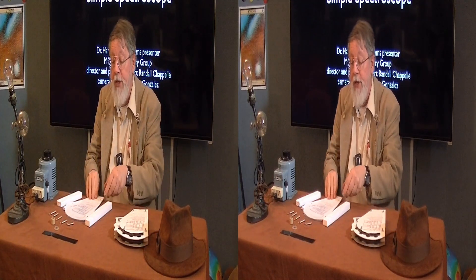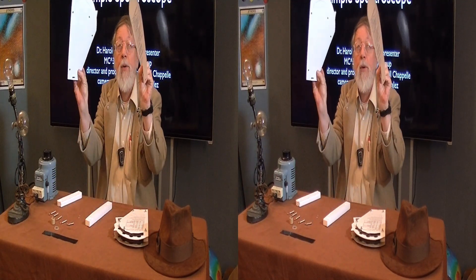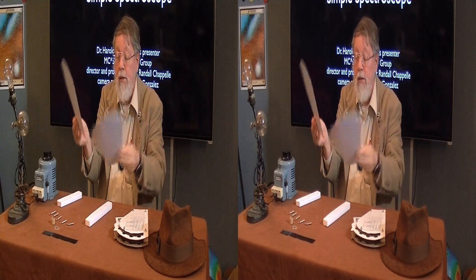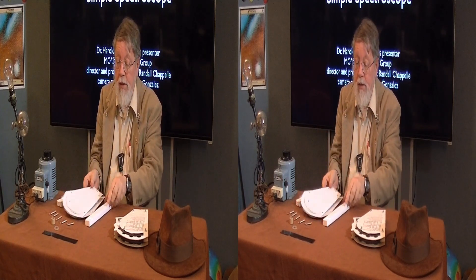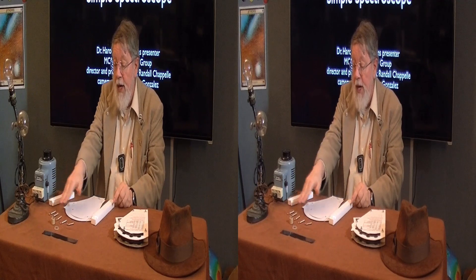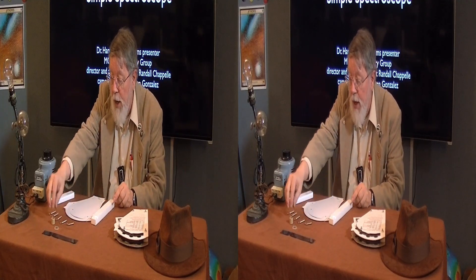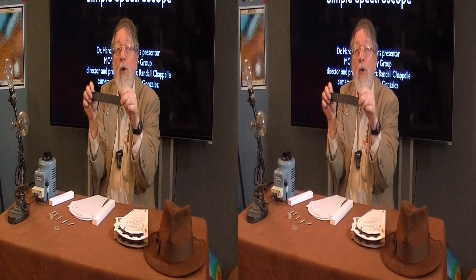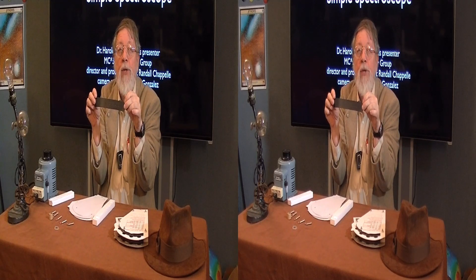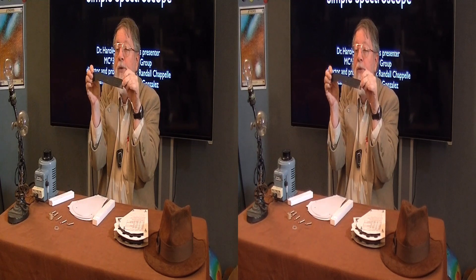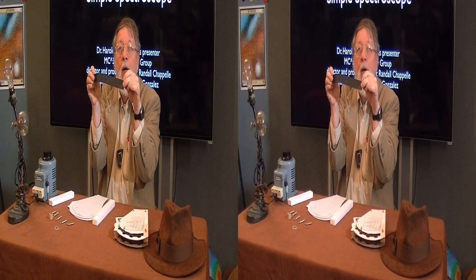Here are the pieces of your simple spectroscope: five nuts and bolts, a spacer, and this grid that has nanometers and electron volts on it. The light will pass through the big slit here.